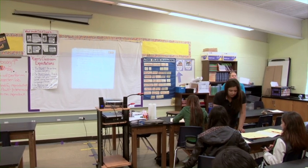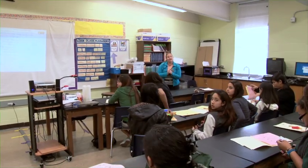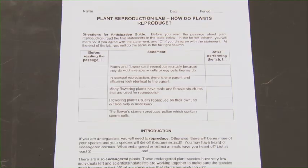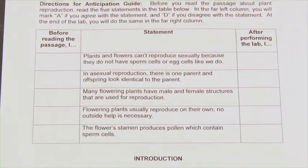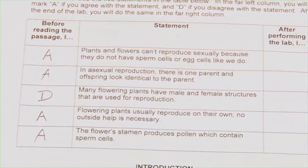An Anticipation Guide is a series of statements that I usually have the kids read before they do an activity and then after they do the activity. I try to come up with ideas or statements that are maybe a little bit unusual, maybe that they're going to strongly disagree with. Then I have the students either read through them silently, or if there's a lot of new vocabulary I'll read it for them, and they'll either write an A if they agree with a statement or a D if they disagree.